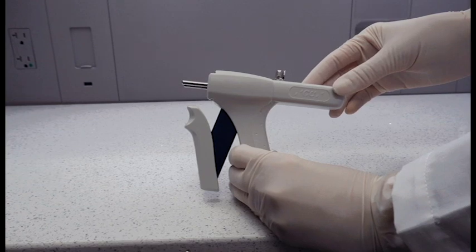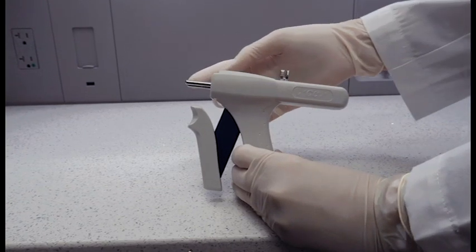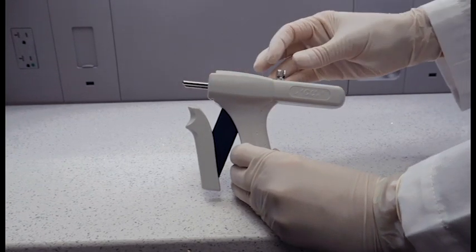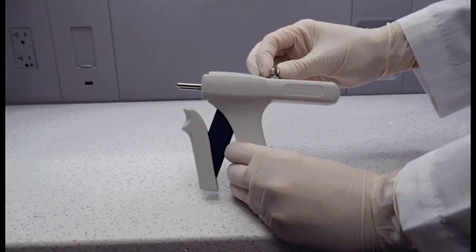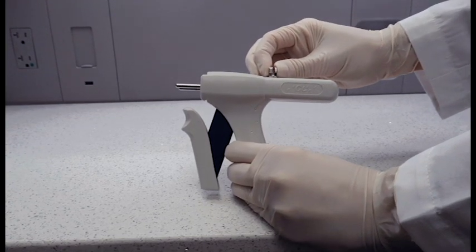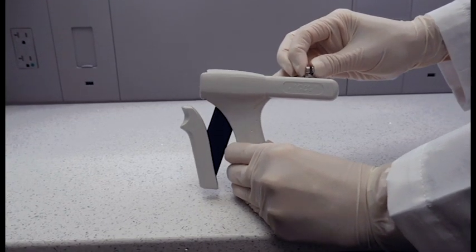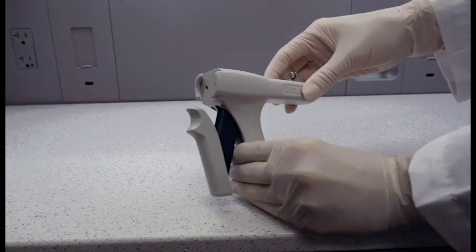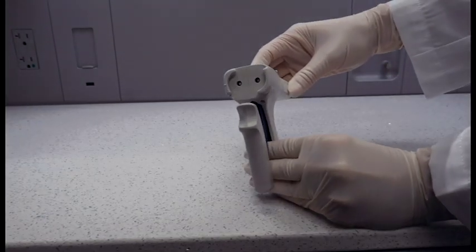First, look at the dispensing gun. If the piston is engaged or partially engaged, retract the piston back by squeezing the two metal tabs on top of the dispensing gun and sliding the piston all the way back. If this is not done, the cartridge will not seat.